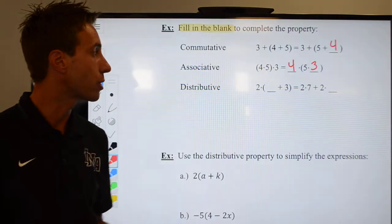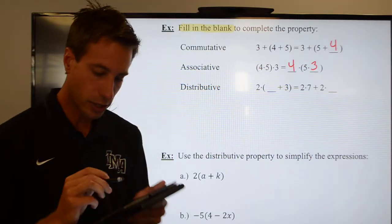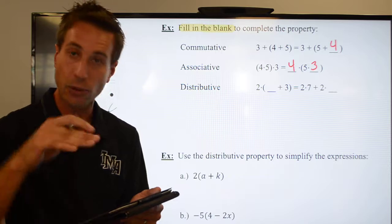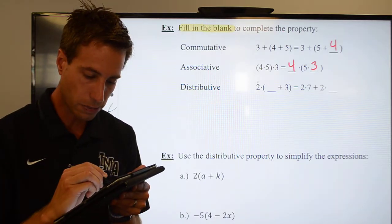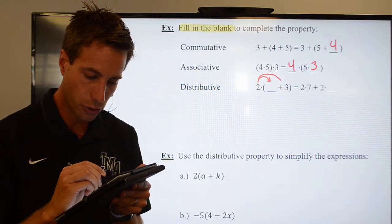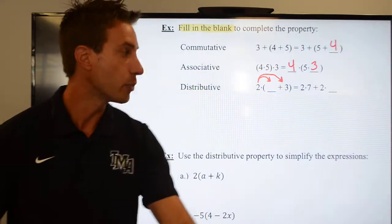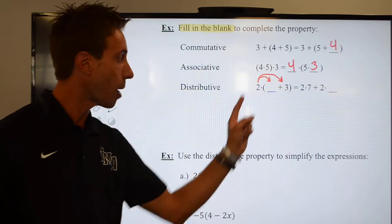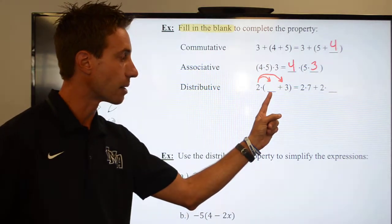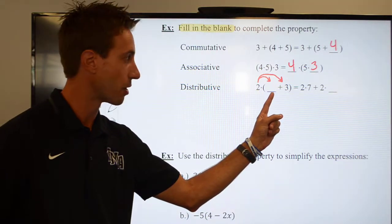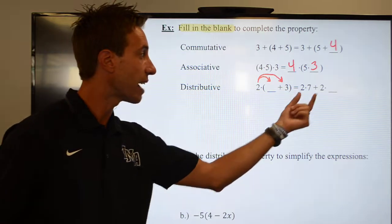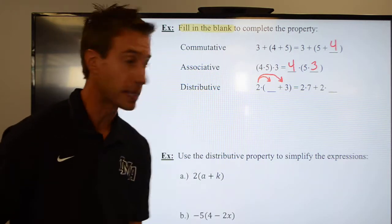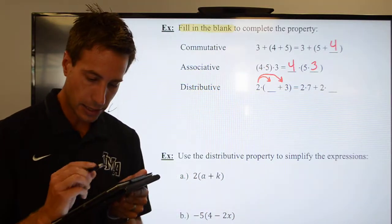The next one is the distributive property. And here's what we do with the distributive property. Remember, anytime you have a number in front of a grouping symbol and it's multiplication, you will multiply that number through the parentheses. So here we go. Let's see if we can fill in what these blanks are. Now in order to do this distributive property, I'll be multiplying 2 by whatever this number is, but I don't know what that number is except I look over on the left-hand side and I see a 2 times 7. What that tells me is that this first number needs to be a 7.